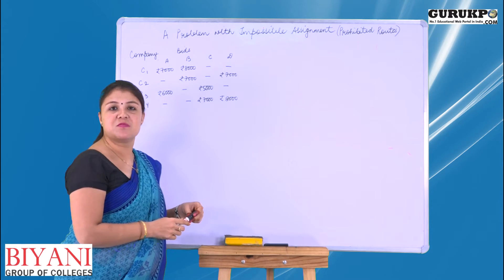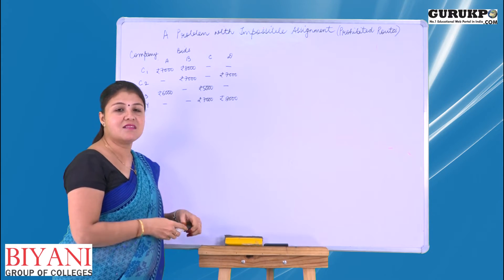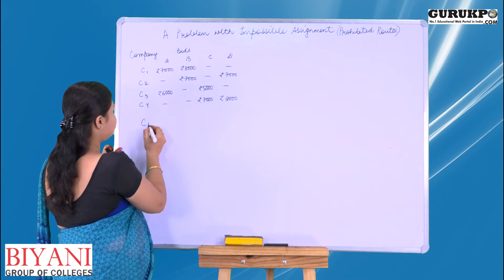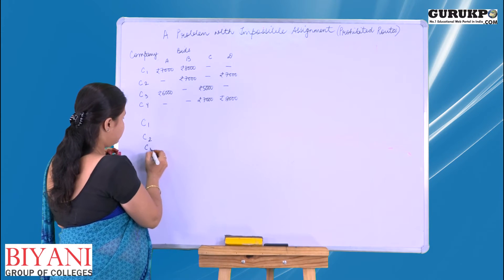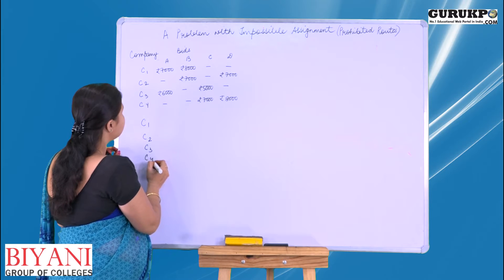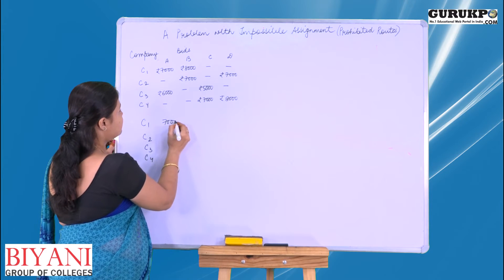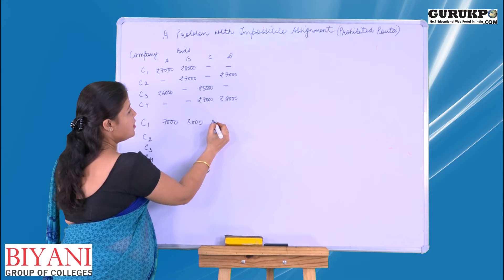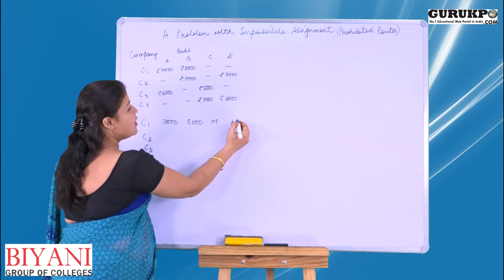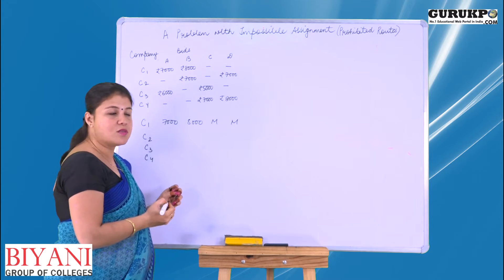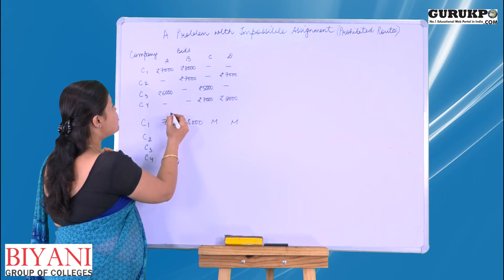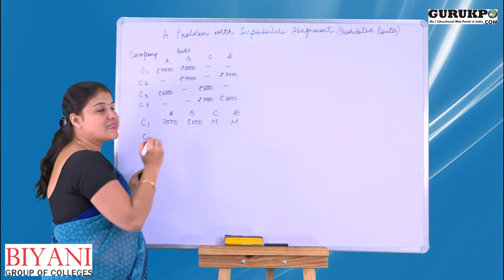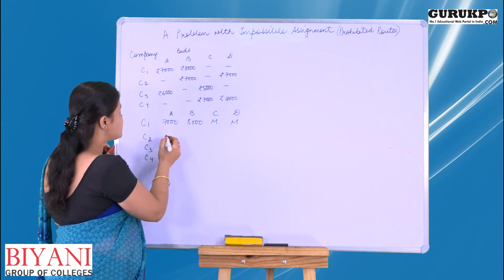For the prohibited cells, we will assign the highest possible cost, that is M. These M values represent the highest possible cost, meaning we are not giving any assignment to those cells.